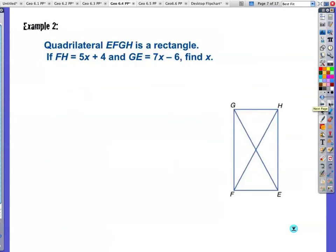Example 2, quadrilateral EFGH is a rectangle. So all those rectangle and parallelogram rules apply. And FH is 5x plus 4, and GE is 7x minus 6, find the value of x. And because this is so similar to example number 1, this is going to be kind of your little at home, do it yourself, see how you do. If you have questions, let me know. I'm going to go on to the next one, but this one should be in your notes.